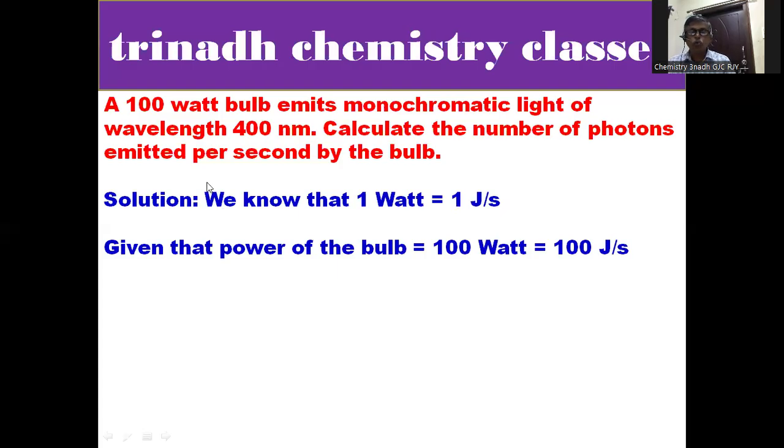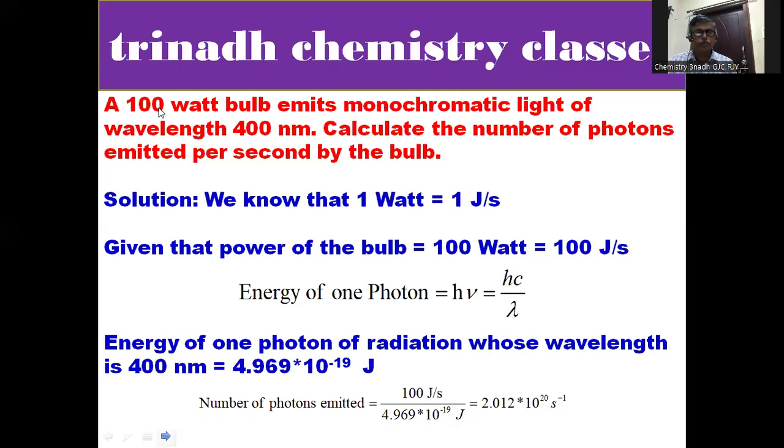We know that 1 Watt is equal to 1 Joule per second. Given that power of the bulb is 100 Watt, that equals 100 J/s. The wavelength emitted is 400 nanometers, so lambda equals 400 nanometers.